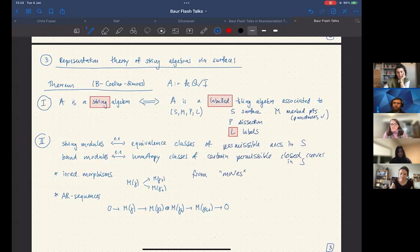And then you get irreducible morphisms from pivot elementary moves. And I'll try to show that in an example on the next page. From moves at end points of a curve.